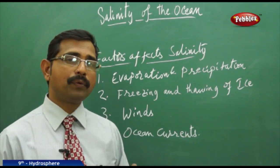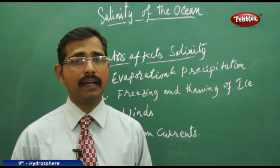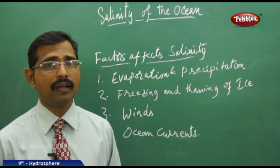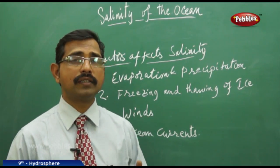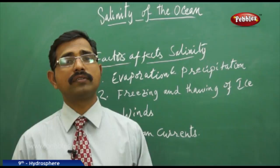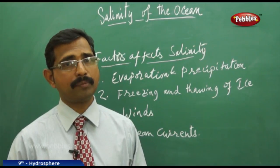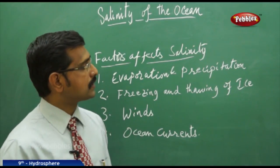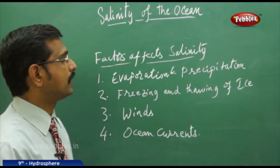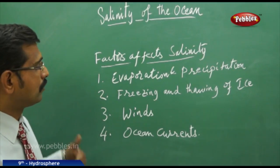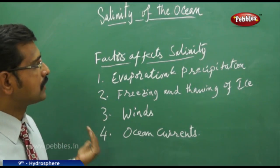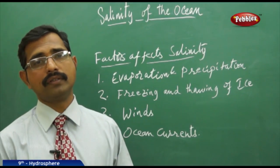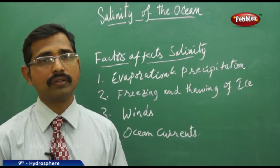For example, the Baltic Sea and Hudson Bay have about 15 PPT of salinity, meaning their water is less saline. This is how we measure the salt content of the ocean or sea.